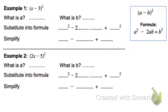Here I'm going to show you how to solve a problem like this where it's two numbers, a binomial being subtracted, squared, using this formula right here.